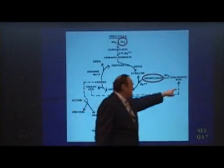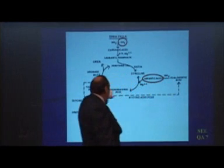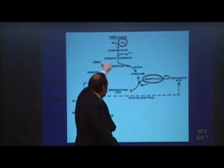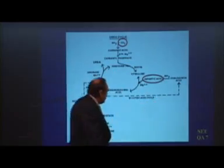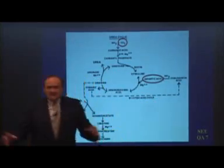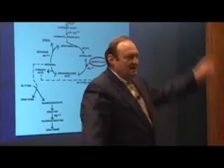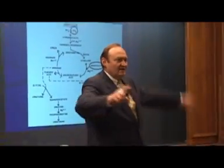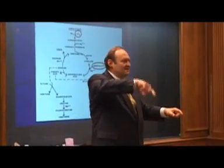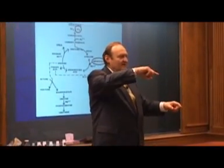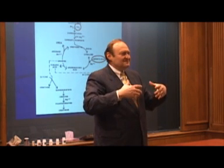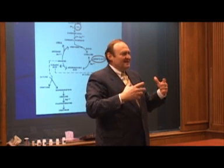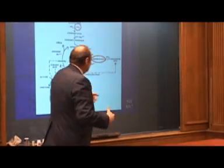The fumaric acid goes back around to oxaloacetic acid, which has an ammonia group added to it to become aspartic acid. There's this loop going here, and this loop is part of a bigger loop of the citric acid cycle. It's like chemical gears — the citric acid cycle is one gear, and the urea cycle is another gear, with an intermediary gear between them.